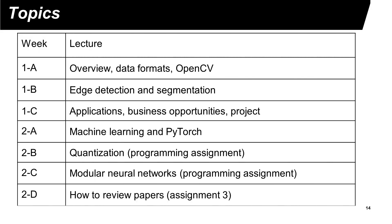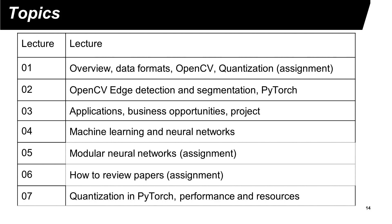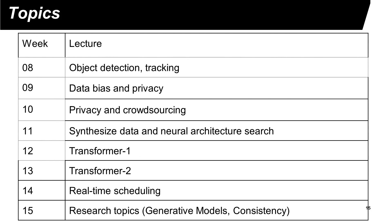Let me give you an overview of this course. In the first week, we will talk about OpenCV and how to use it for edge detection and segmentation. The third lecture of the first week will explain how to think about business applications. In the second week, I will talk about machine learning and PyTorch, and explain the two programming assignments about quantization and modular neural networks. In week three, we will consider performance and resource requirements, and ways to improve the efficiency of computer vision for embedded systems. I will also talk about generating data for training using computer graphics, and cover data bias and privacy. In the last week, I will explain some recent research topics, including topics conducted by my research team.